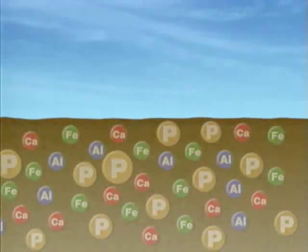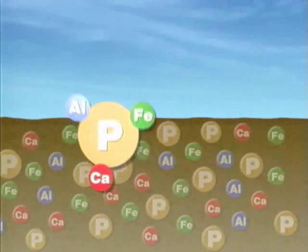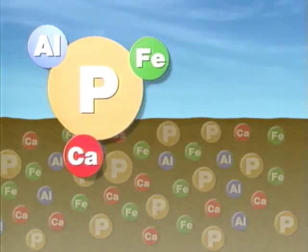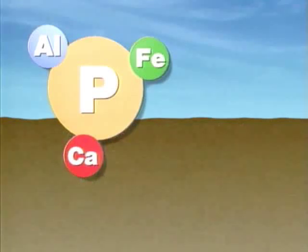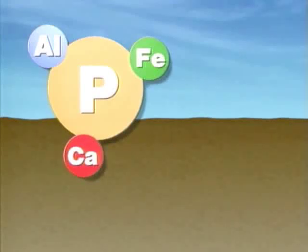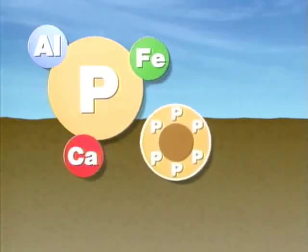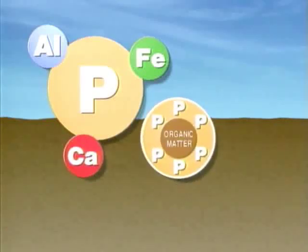The soil contains a bank of phosphate, most of which is tied up with aluminum, iron, and calcium in the plow layer. This represents some 400 to 10,000 kilograms per hectare of unavailable phosphate. More phosphate is contained in the organic matter and is continually released by the biological activity in the soil.